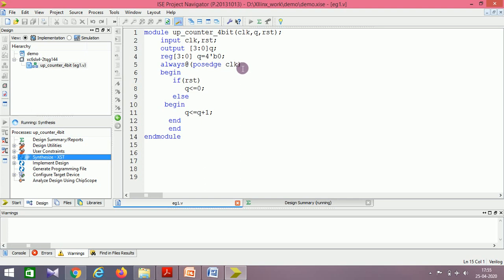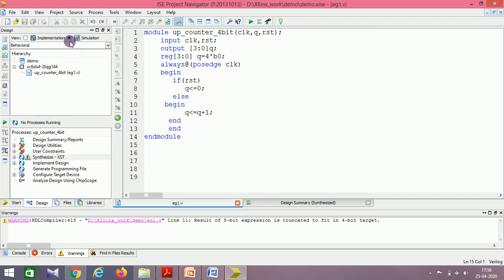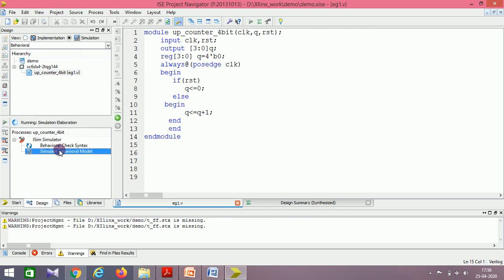Same code I have copied. I'll synthesize it now. Whenever the positive edge is encountered, your Q will be incremented if reset is zero. If reset is one, irrespective of your clock, Q will be always at zero. Here it is giving some warning—line number 11: result of 5-bit expression is truncated to fit to 4-bit. I explained in the paperwork that when Q reaches the maximum 1111 (15), 15 plus 1 will be 16—one 5-bit. The most significant bit will be ignored and only the least four bits will be assigned to Q. That is what has been warned here, and it is intentional. You can ignore it. Now let me simulate it.